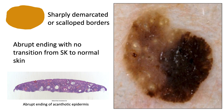The sharply demarcated or scalloped borders represent the abrupt ending with no transition from seborrheic keratosis to normal skin, and this correlates on histopathology with the abrupt ending of the acanthotic epidermis.